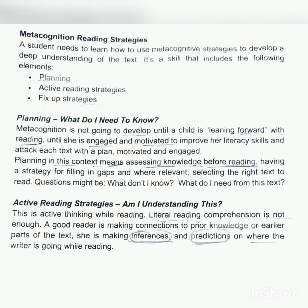The third strategy is fix-up strategy — should I read this page again? Sometimes while reading, the text doesn't make sense. In these cases, metacognition reading strategies such as slowing down to fit the difficulty of the text, or circling back to earlier in the book for context, might help. What you need to do is stop, slow down, and go back to read it again. This fixing-up of problems found during reading is a key example of metacognition proficiency.